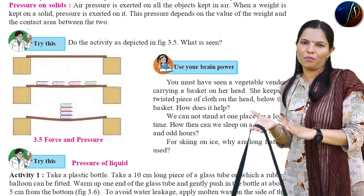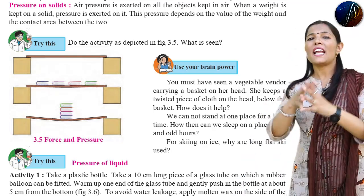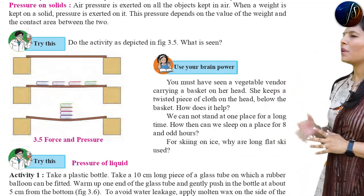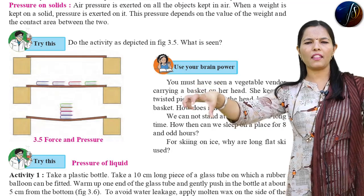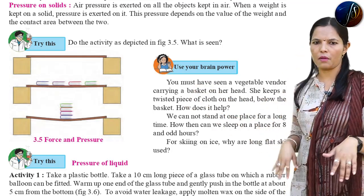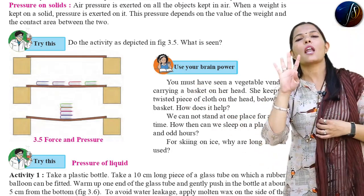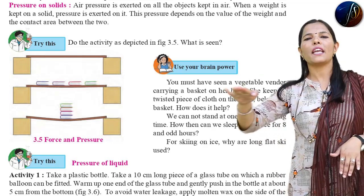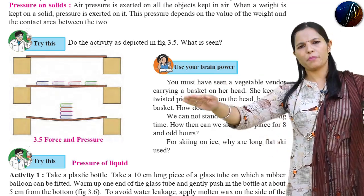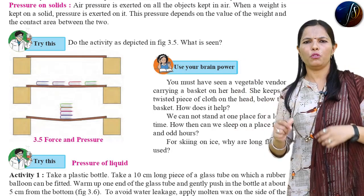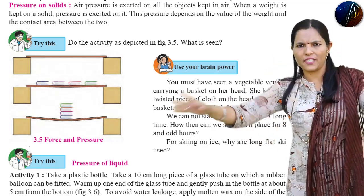What is the diagram? The diagram shows two boxes. The first diagram is a plank, and the second diagram shows 4 boxes. With 4 boxes, the pressure is equally distributed.